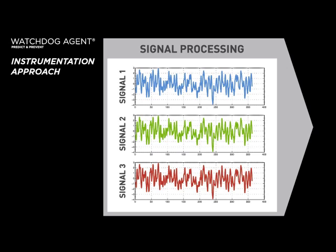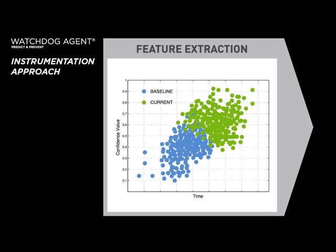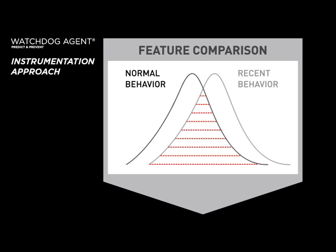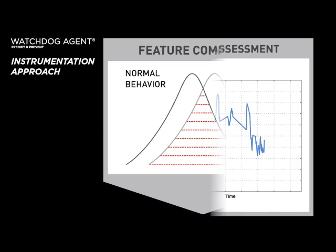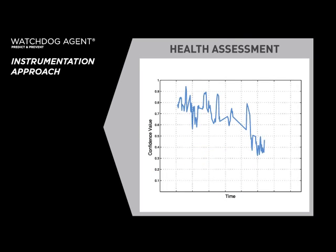Features, which are portions or characteristics of data that best indicate performance, are then extracted using signal processing tools. These features are then analyzed using appropriate tools specialized for health and performance assessment.